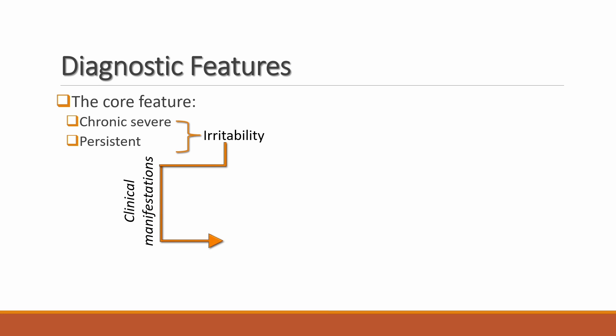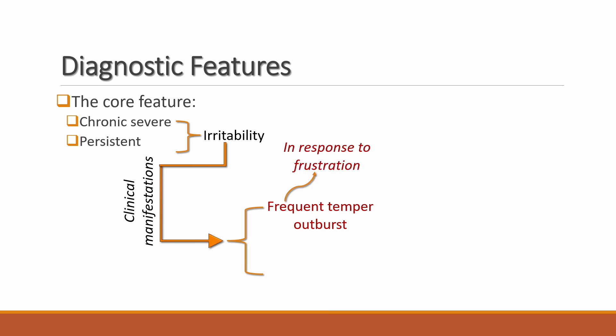The first prominent clinical manifestation is frequent temper outbursts, which typically occur in response to frustration and can be verbal, behavioral, or both. Behavioral outbursts include aggression against property, self, or others.